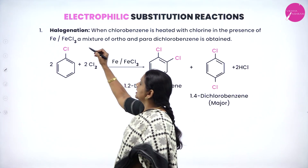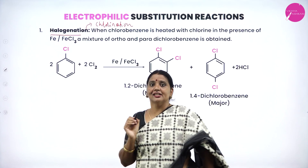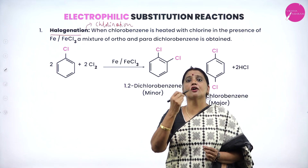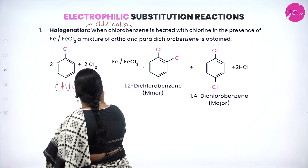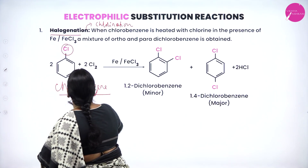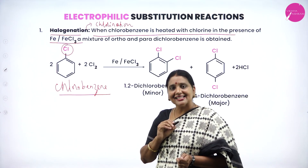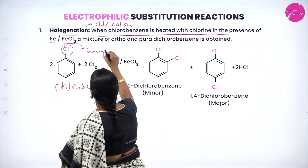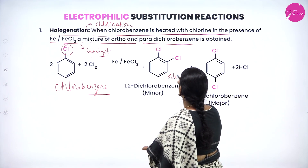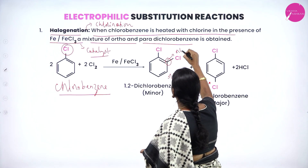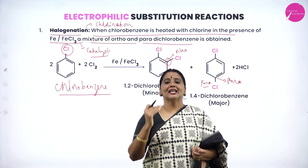Let us consider halogenation — specifically chlorination. Chlorination means addition of chlorine. Taking chlorobenzene as the example: when chlorobenzene is heated with chlorine in the presence of iron or ferric chloride as a catalyst, we get a mixture of ortho and para dichlorobenzene. Chlorine is introduced to the ortho position in one molecule and to the para position in another.